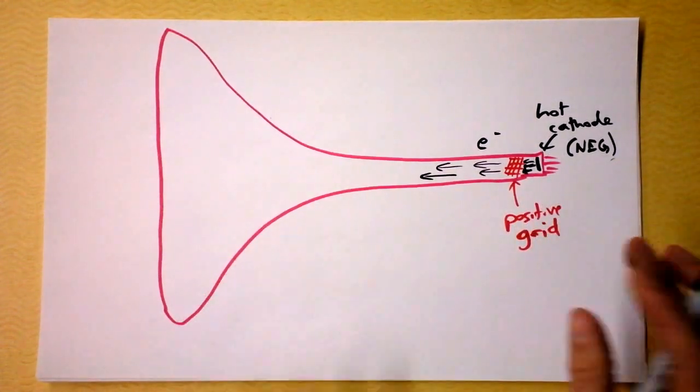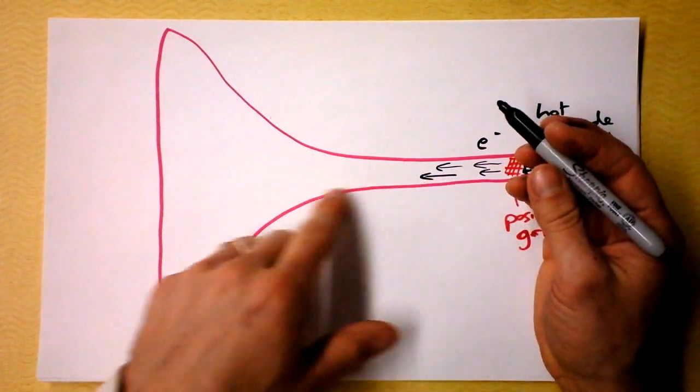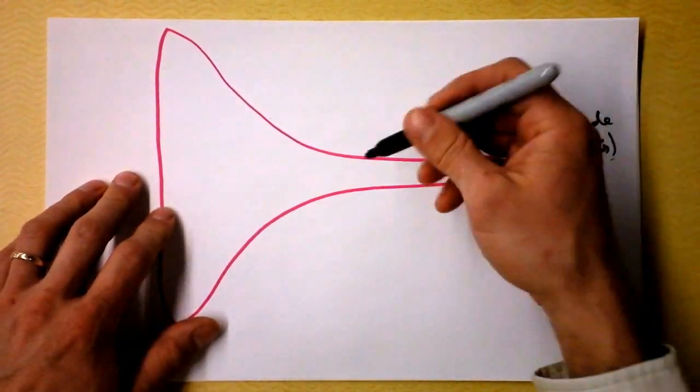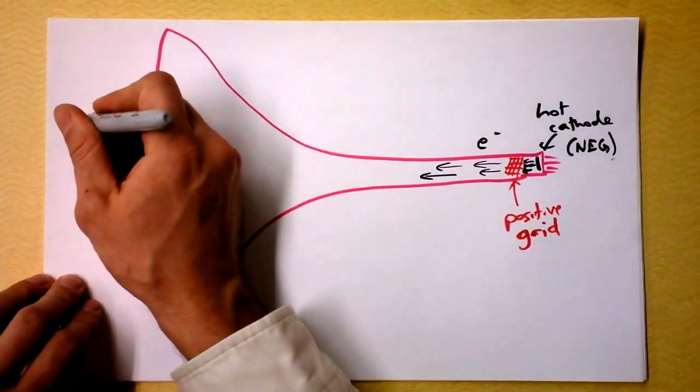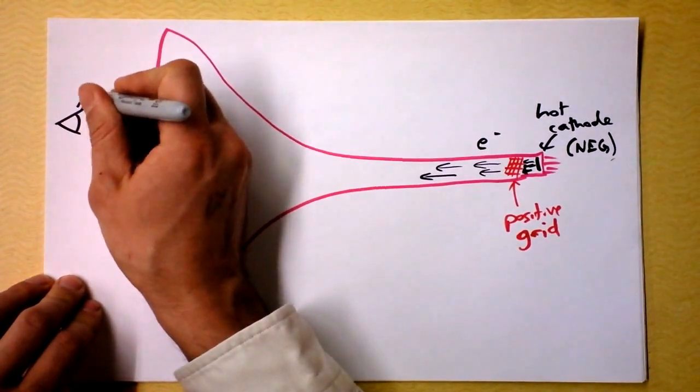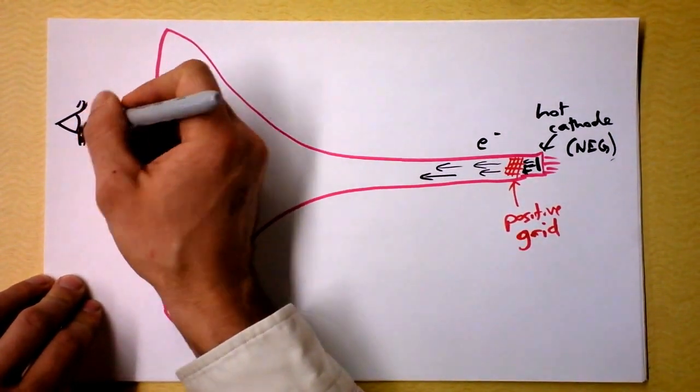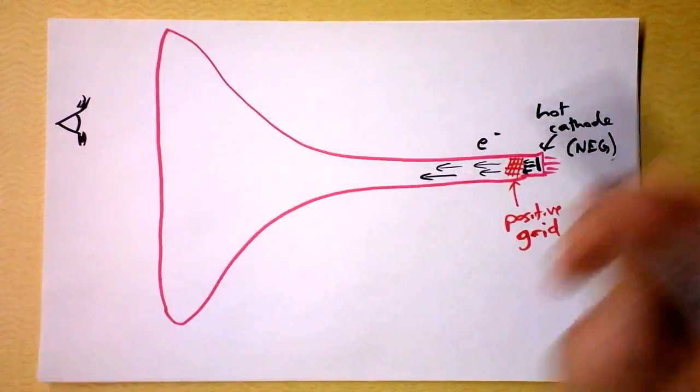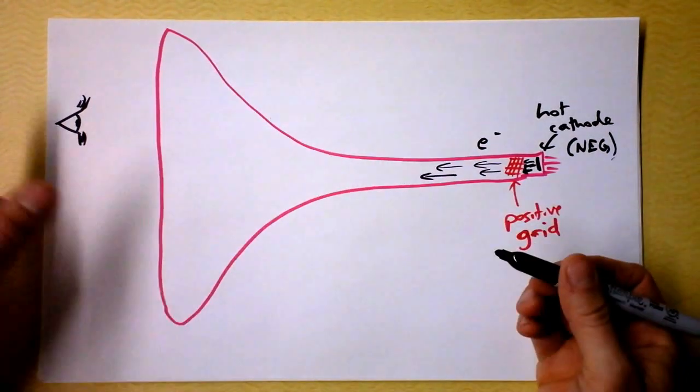And then what you do is you can steer this beam of electrons. So this is you out here, you are watching the television, those are your eyelashes, they look very nice, that's a lot of mascara, you maybe shouldn't wear quite that much.